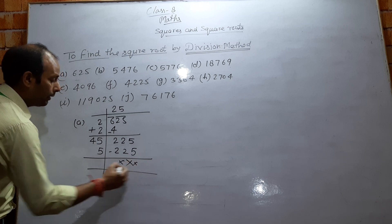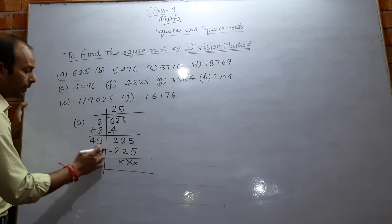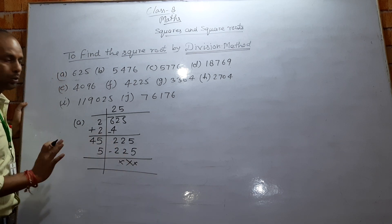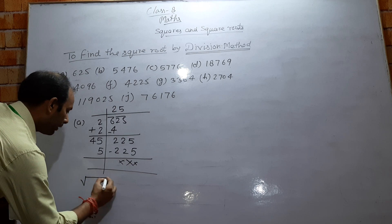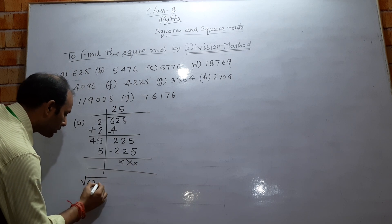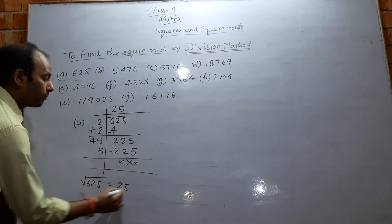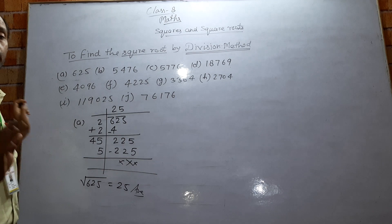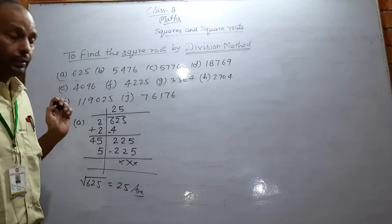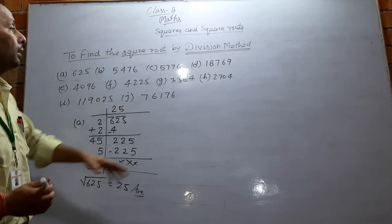When the remainder is 0, the division is complete. So the square root of 625 is equal to 25.